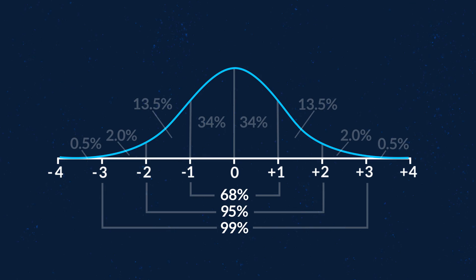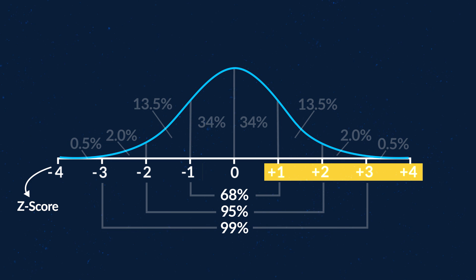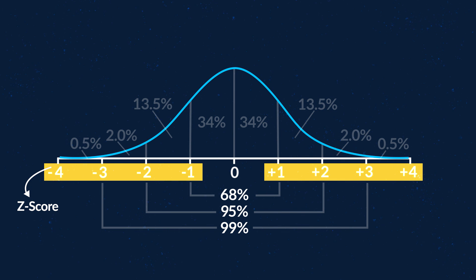You'll also need to understand z-scores and percentiles. A z-score is a numerical measurement that describes how many standard deviations a particular score is away from the mean. In a normal distribution, a positive z-score is higher than the mean and a negative z-score indicates it's lower than the mean. Z-scores allow us to compare things that are not the same, as long as they are normally distributed. Understanding z-scores and standard deviations is something you'll definitely want to make sure you know.